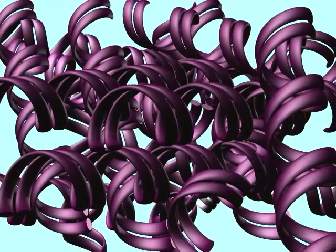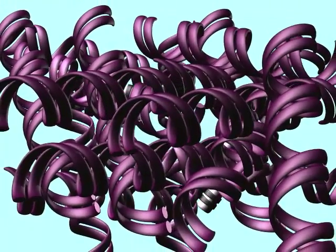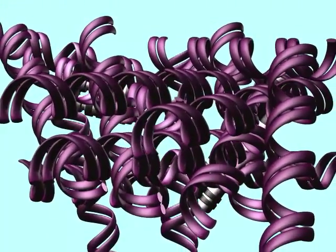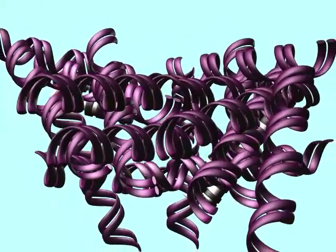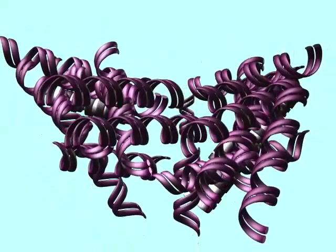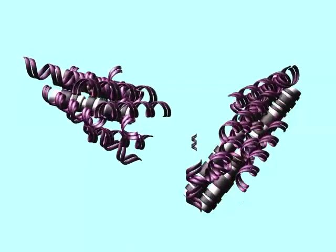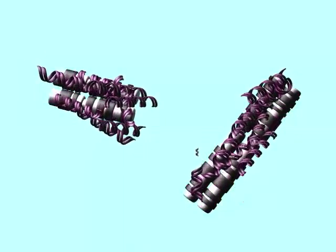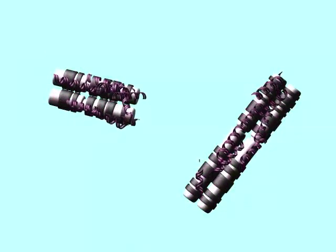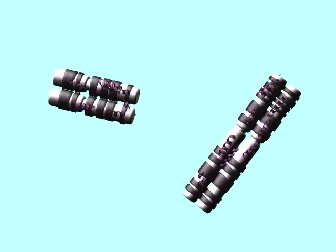While a cell is not dividing, DNA is in the form of chromatin, which is unwound and accessible. While a cell is dividing, DNA can be more tightly packed to form chromosomes.